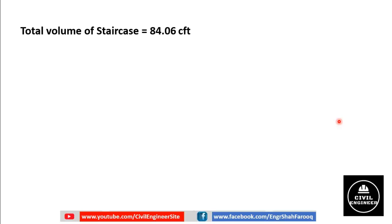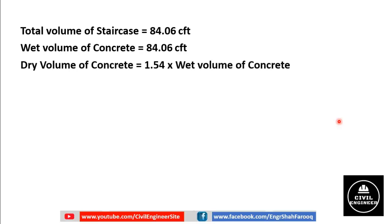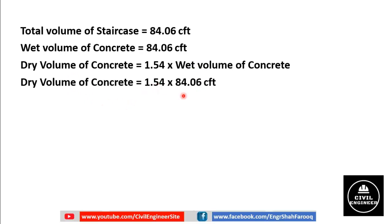The wet volume of concrete equals the total volume of the staircase, which is 84.06 cubic feet. To determine the quantity of each material, we need the dry volume of concrete. Dry volume is determined by multiplying wet volume by 1.54 — the factor used to convert wet volume to dry volume. So dry volume of concrete equals 1.54 × 84.06 = 129.45 cubic feet.